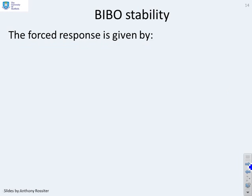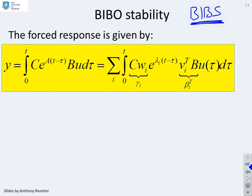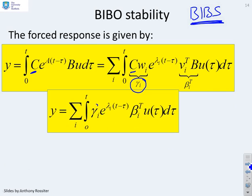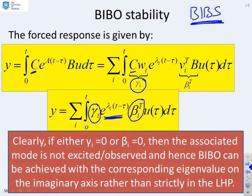For BIBO stability — bounded input, bounded output — the subtle difference from BIBS is the introduction of the matrix C, which introduces a variable gamma i equal to Cwi. Looking at the output responses, there's a gamma i term, a beta i transposed term, and between them the i-th mode. If either gamma i is zero or beta i is zero, then the associated mode is either not excited or not observed. Hence you can give a bounded output result even if that eigenvalue is on the imaginary axis.